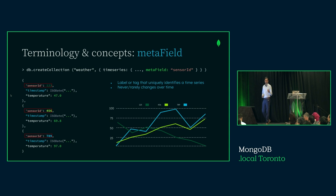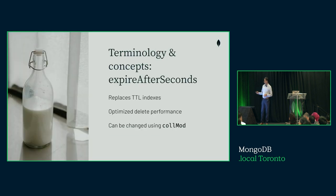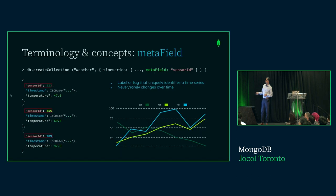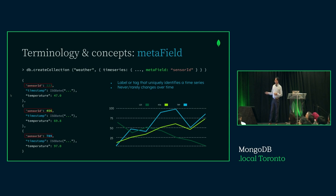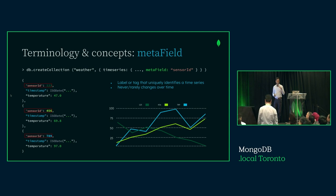The meta field defines what the measurements are based on. So for sensor ID, vehicle ID, and so on — the meta field is critical because it defines the cardinality of your time series data. Cardinality dictates how many buckets you're going to have in the time series collection, because each metadata value will create its own bucket. We're optimizing data storage by grouping measurements for a single entity — the metadata.